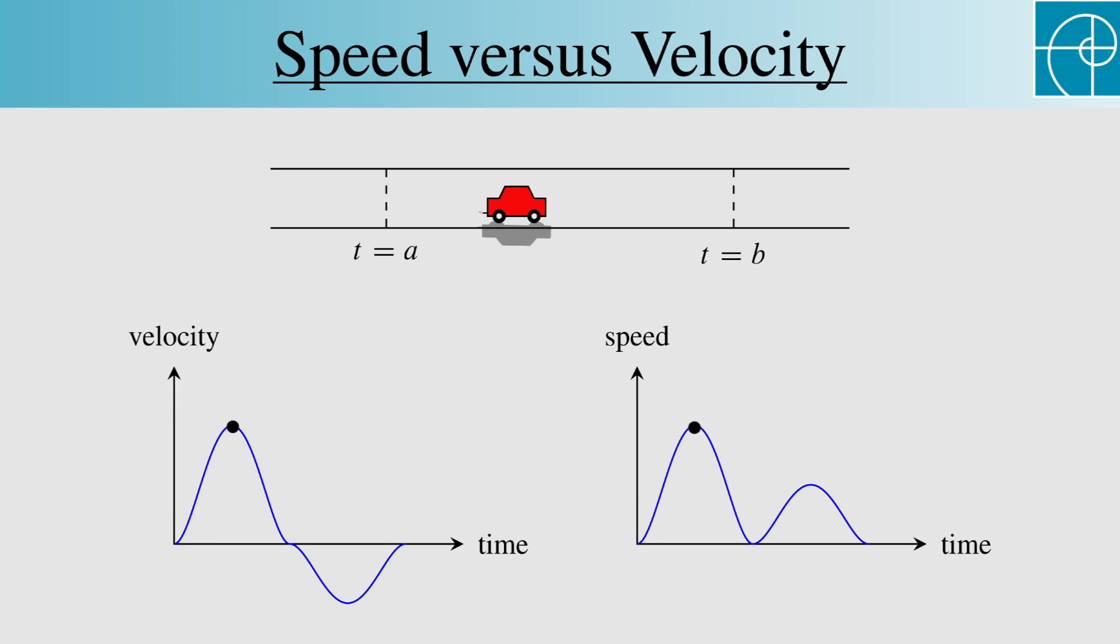Remember now the original car example, where we assumed that the car was traveling on a straight road. We did that because we're using a single number to represent velocity, and the most we can say about direction is forward or backward.